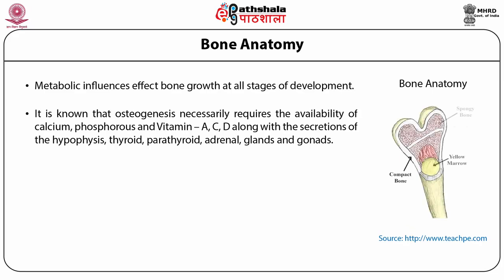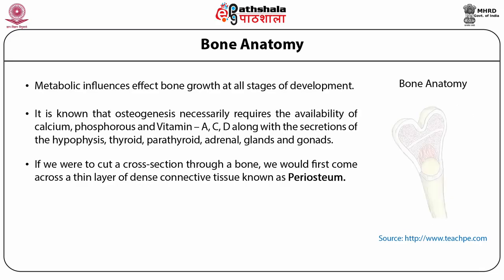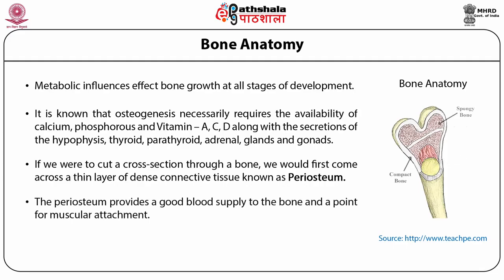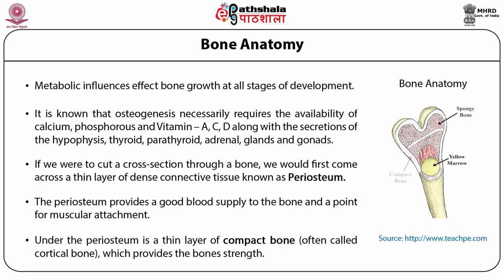If we were to cut a cross-section through a bone, we would first come across a thin layer of dense connective tissue known as the periosteum. This can be divided into two layers: the outer fibrous layer containing mainly fibroblasts, and an inner cambium layer containing progenitor cells which develop into osteoblasts, the cells responsible for bone formation. The periosteum provides a good blood supply to the bone and a point for muscular attachment. Under this periosteum is a thin layer of compact bone, also called cortical bone, which provides the bone's strength. It consists of tightly stacked layers of bone which appear to form a solid section, although they do contain osteons which, like canals, provide passageways through the hard bone matrix.